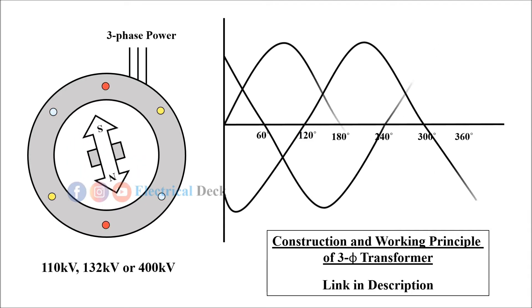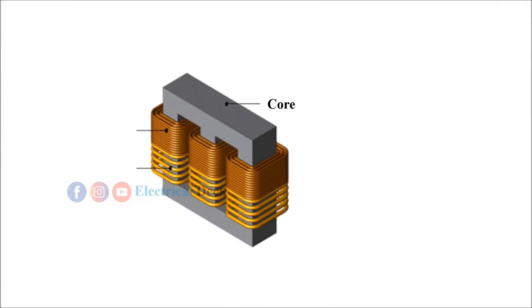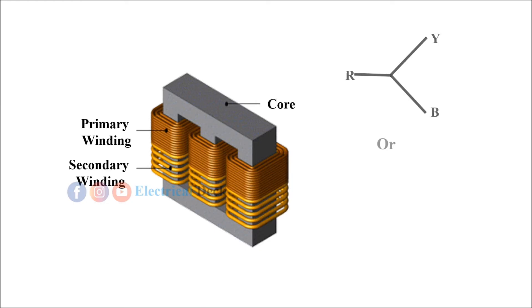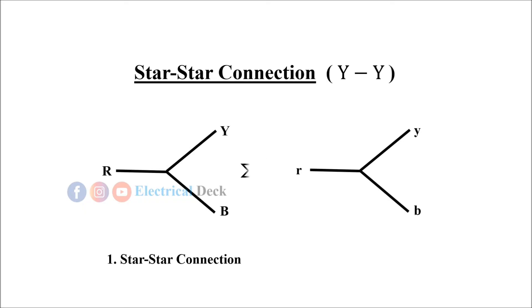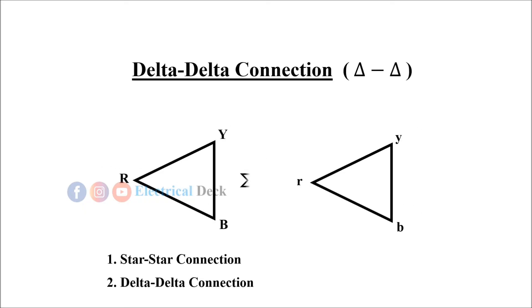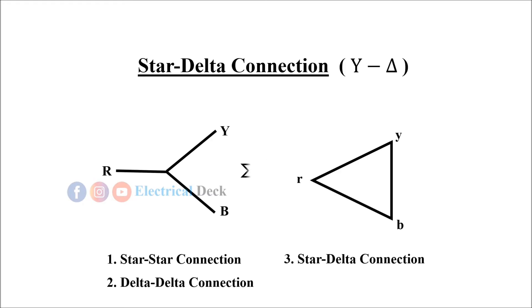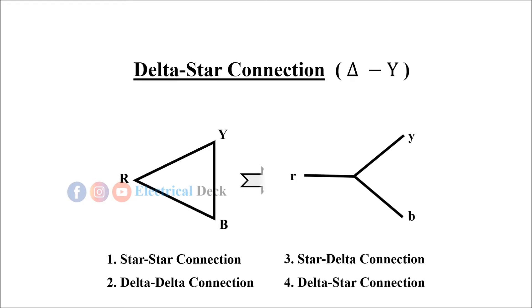Now let us see the different winding connections of a three-phase transformer. The primary and secondary of a three-phase transformer, as three-phase windings, can be connected in different ways such as in star or in delta. With suitable connection, voltage can be raised or lowered. The most commonly used connections are star-to-star, delta-to-delta, star-to-delta, and delta-to-star.